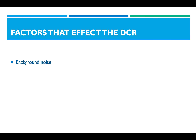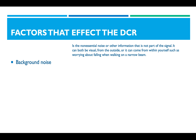Factors that can affect the DCR include background noise, which is the non-essential noise or other information that is not part of the signal or the prime. It can be both visual from the outside, or it can come from within yourself, such as worrying about falling when you're walking on a narrow beam.